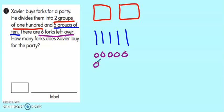Now it's asking, how many forks does Xavier buy for the party? So all I need to do in this case is add up how many he buys. I see I have 100, 200, 10, 20, 30, 40, 50. And 1, 2, 3, 4, 5, 6.